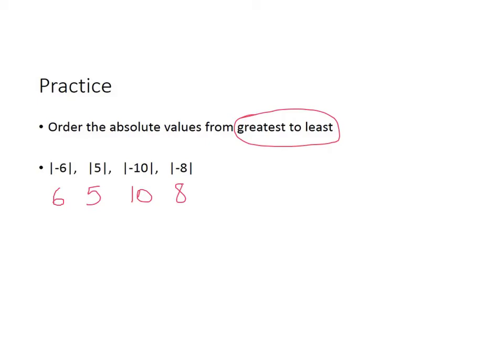Now we can put them in order from greatest to least. Greatest here is 10, so we write it as the absolute value of −10. Then we have 8, which is the absolute value of −8. Then we have 6, which is the absolute value of −6. And then we have 5, which is the absolute value of 5. That's in order from greatest to least.